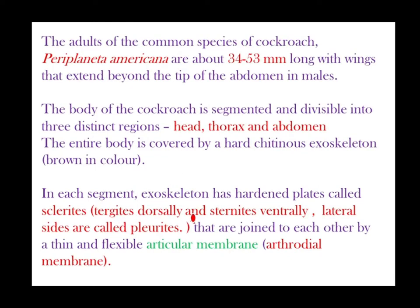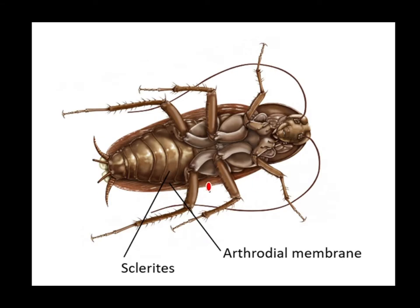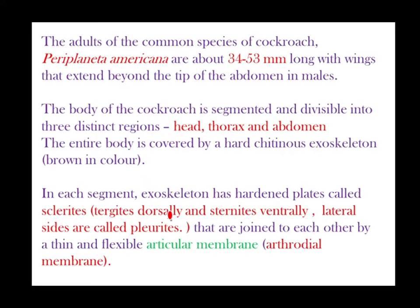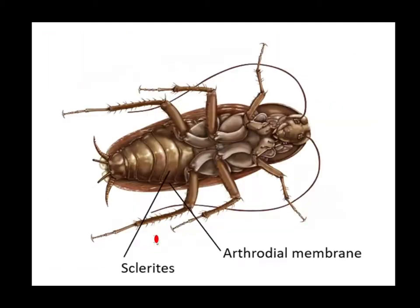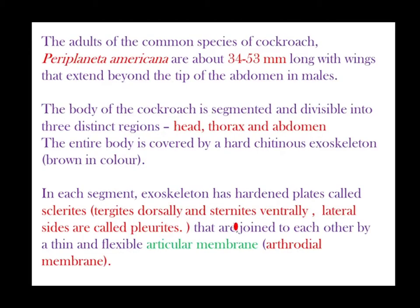Tergite is the dorsal part and sternite is the ventral part. The lateral sides are called pleurites — keep that term in mind.